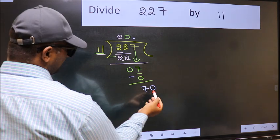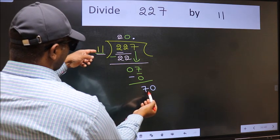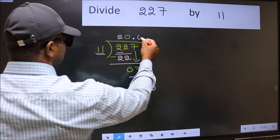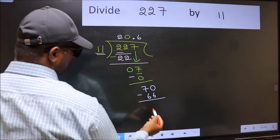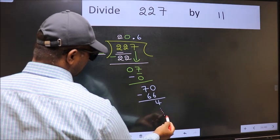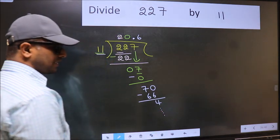So 70. A number close to 70 in 11 table is 11 times 6, which is 66. Now you should subtract. You get 4. And continue the division. I am not doing that.